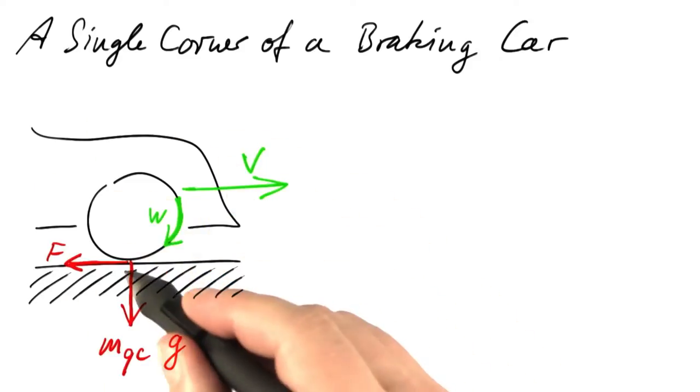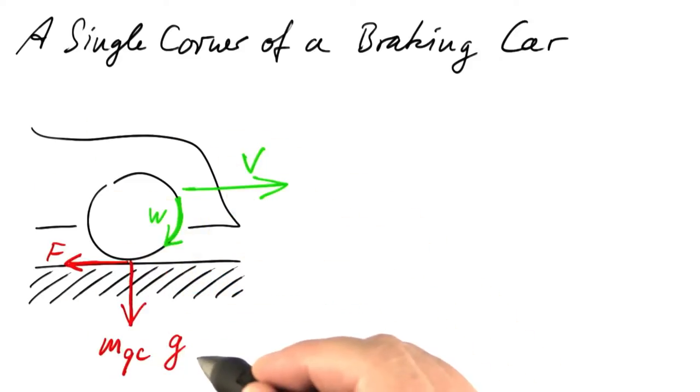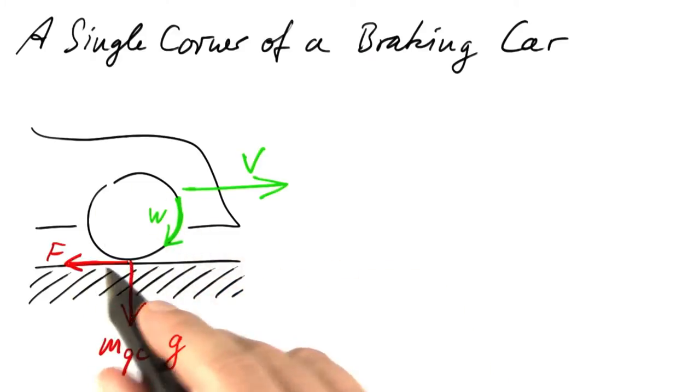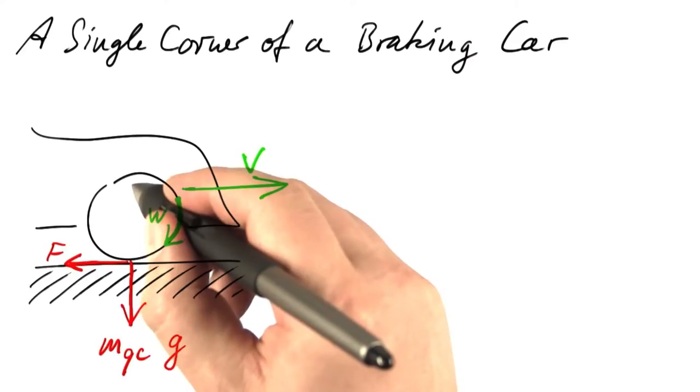This quarter of a car exerts a certain force on the ground, namely the mass of that quarter of the car times gravitational acceleration. By friction, the road surface exerts this force on the wheel. If you wonder about the direction, imagine that the wheel was locked. Then friction would pull it around in a clockwise fashion.